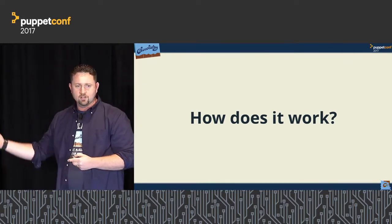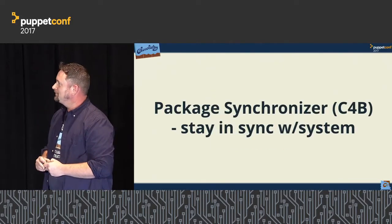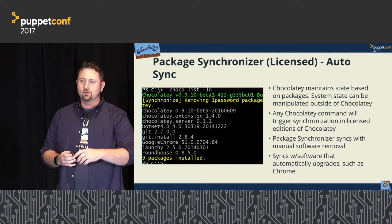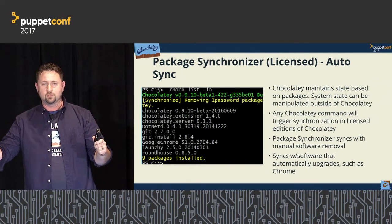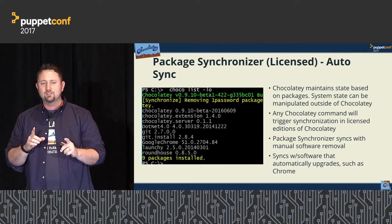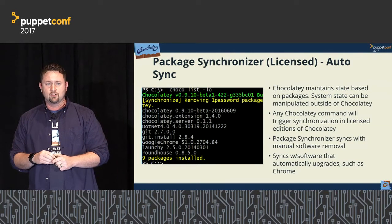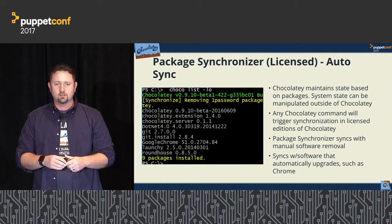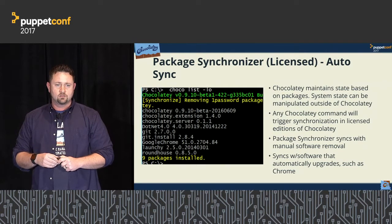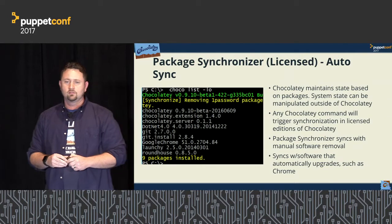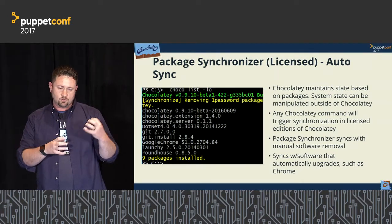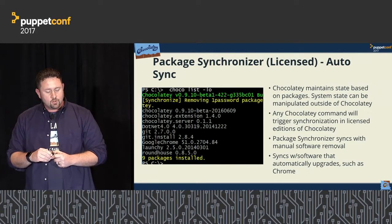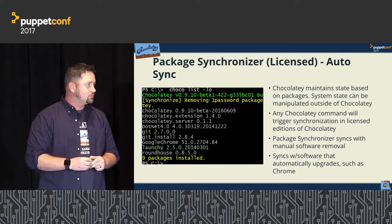Package Synchronizer allows Chocolatey to stay in sync with the system. In open source Chocolatey, if you install a package that puts software into programs and features, you can go directly to programs and features and uninstall or upgrade it outside of Chocolatey — and Chocolatey won't know anything changed. Autosync corrects that: it sees the state has changed and knows the actual state is what's in programs and features. So when that changes, the package should change too — for example, removing the 1Password package because the software was uninstalled outside of Chocolatey.